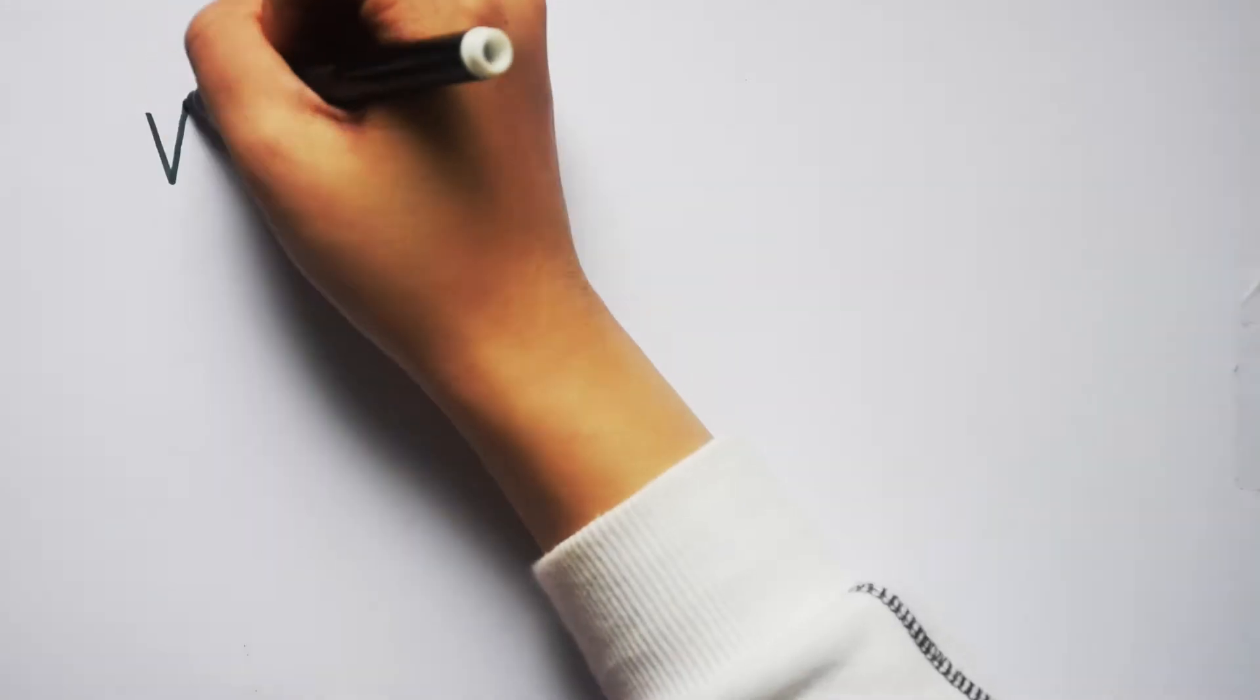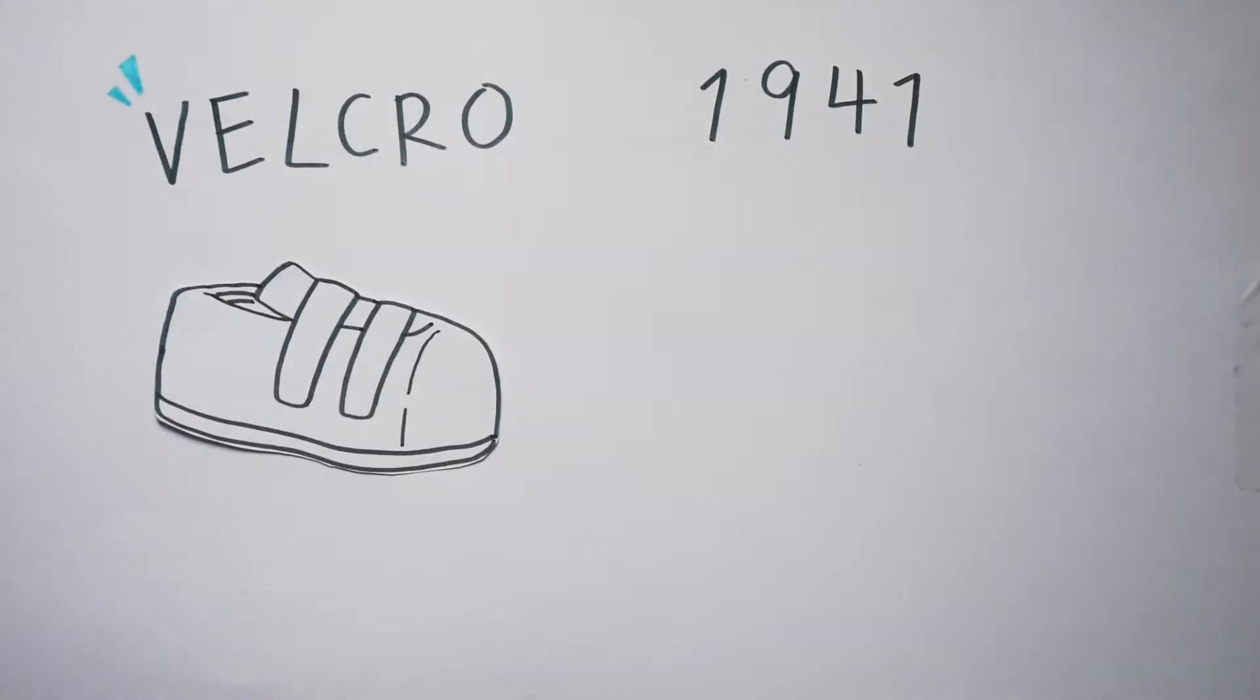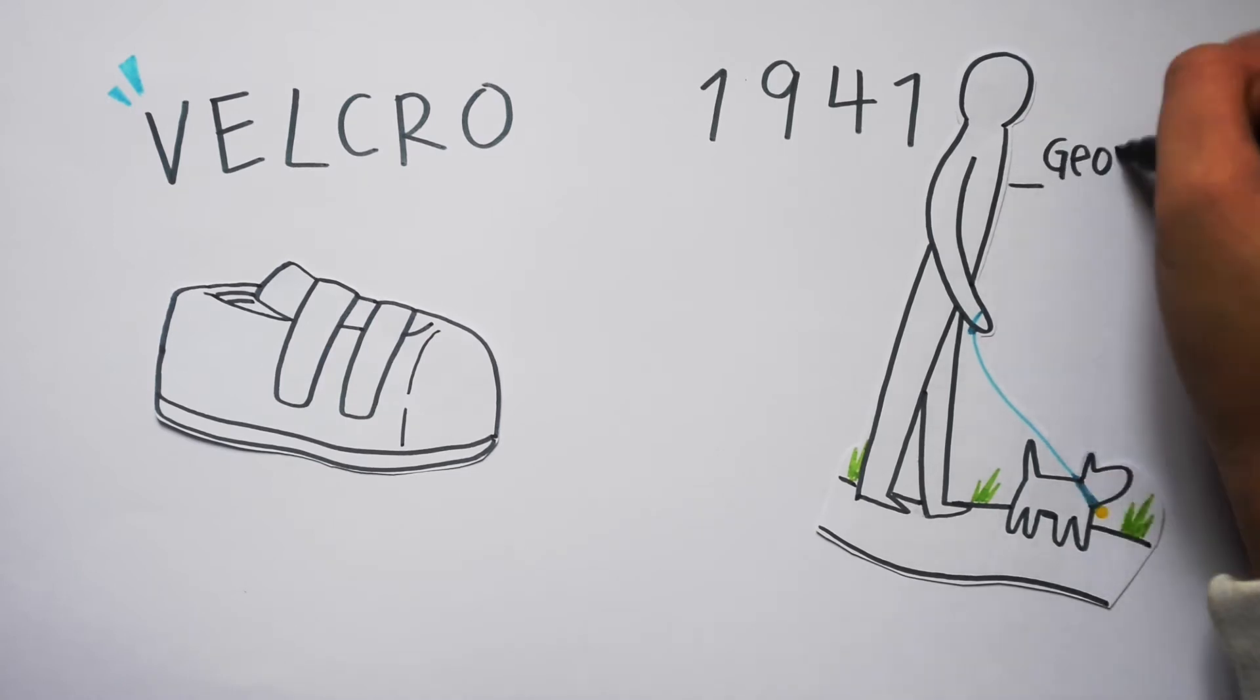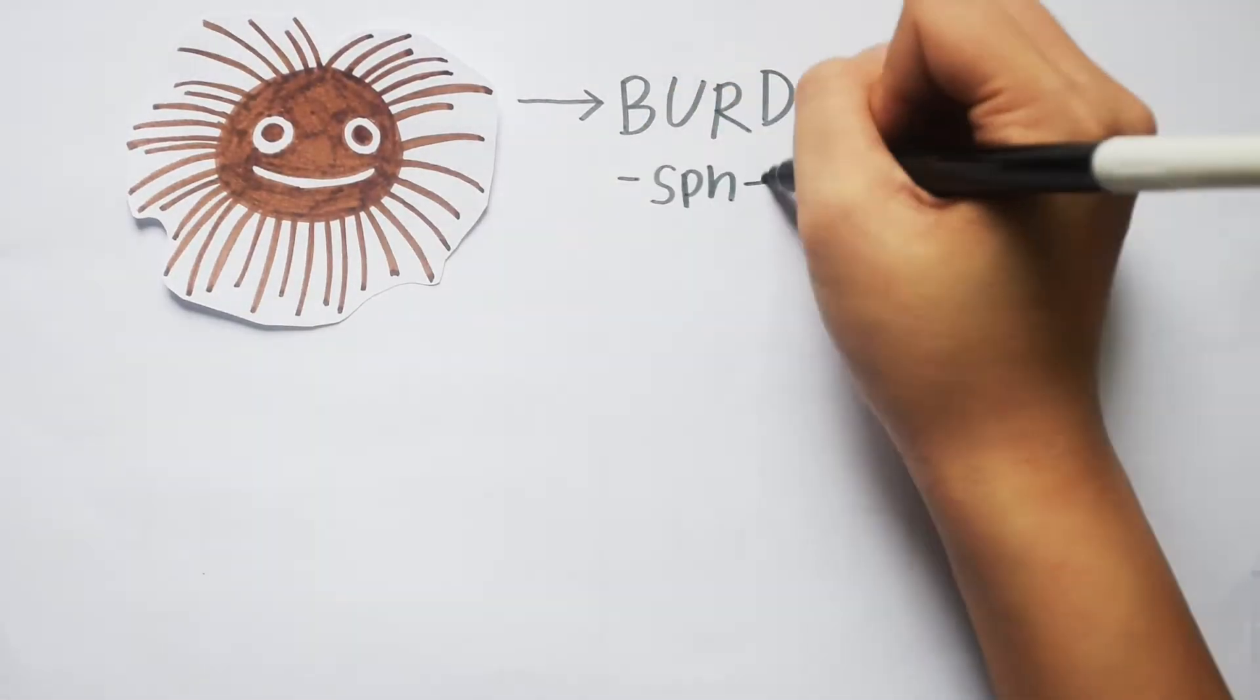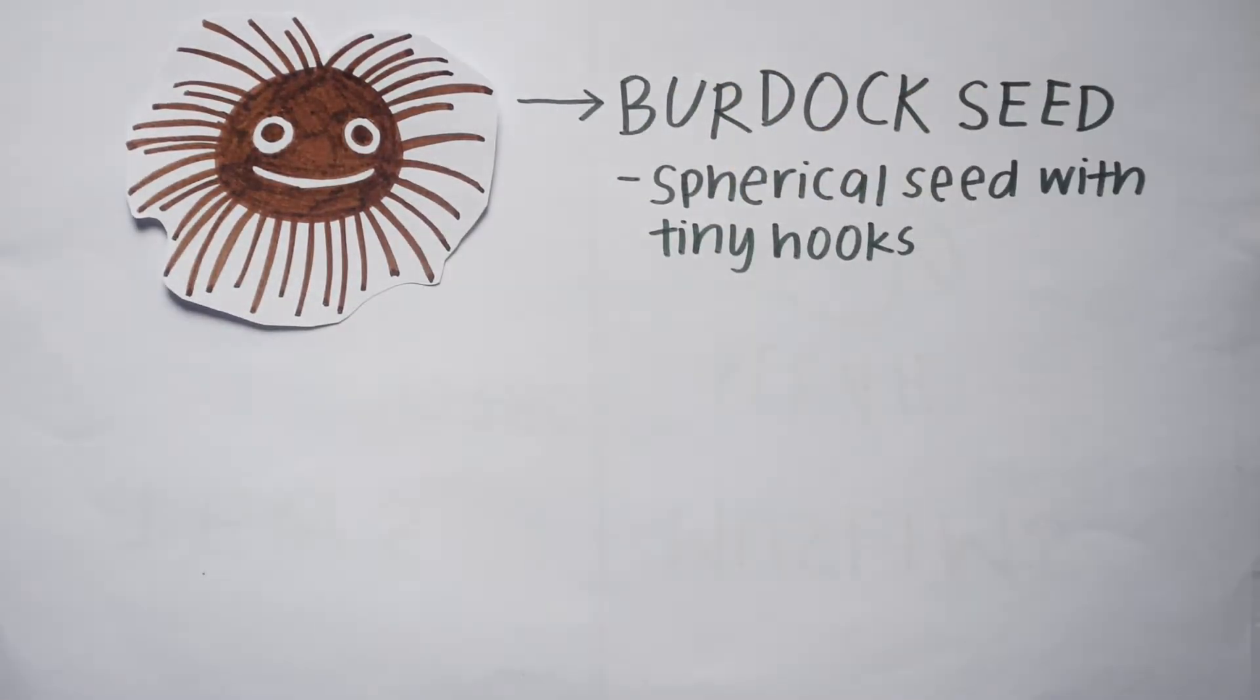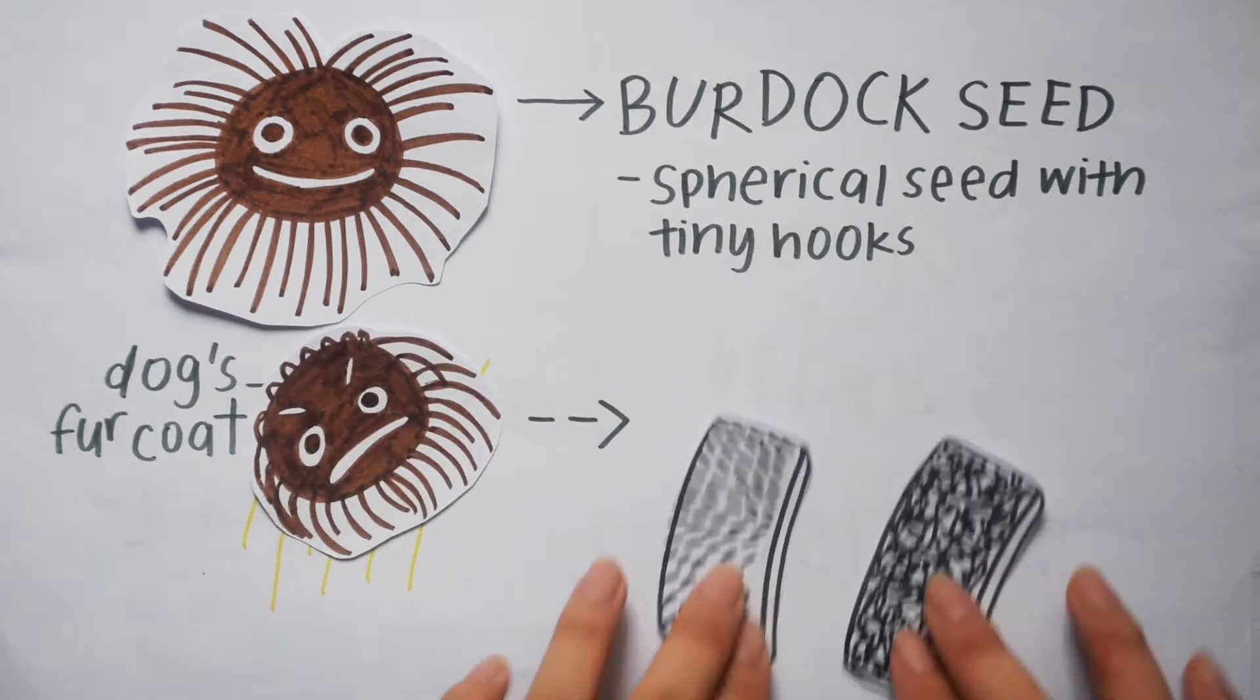Think of Velcro, the stuff we use before we learn to tie our shoes. In 1941, Swiss engineer George de Mestral went for a walk in the park with his dog. Afterwards, he noticed that burdock seeds, spherical seeds with tiny hooks, were clinging annoyingly tightly to his dog's coat. He was inspired by this to create Velcro strips.